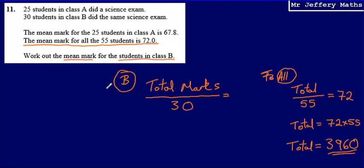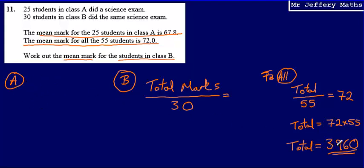But I want just class B. If I know the mean mark for class A, I can work out the total number of marks scored by the students in class A using exactly the same method. Then I can subtract the class A total from the overall total, and that will tell me the total marks scored in class B.